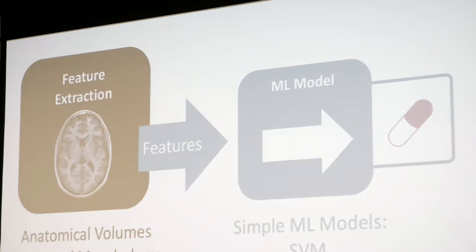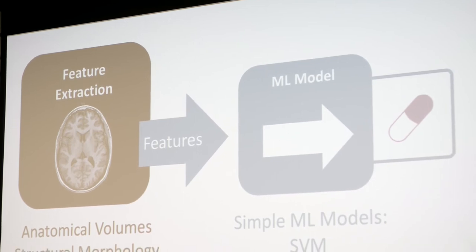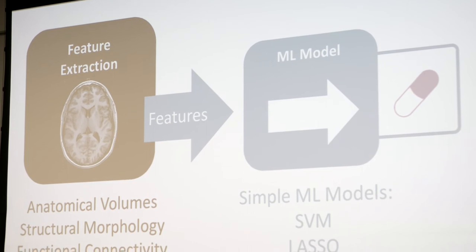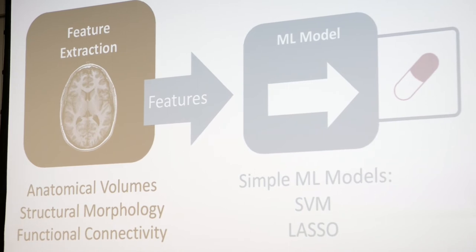The way we usually handle this is with a feature extraction step, using approaches taken directly from the neuroimaging literature. We use tools like FreeSurfer to get anatomical volumes — looking at structures like the hippocampus, how big it is, or different subcortical structures. You might also be interested in structural morphology: what does the cortex look like, how big are the grooves, how long and deep are they? If you're looking at functional images, you'd extract functional connectivity — how are different regions communicating with each other? Then we take those features and learn a machine learning model.